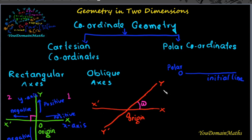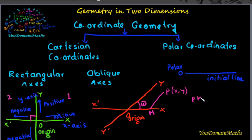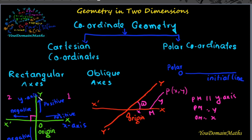Now let P be any point on the plane for the oblique axis. Then point P is defined by P of (x, y). Draw a parallel line from point P, which meets at M, so PM is parallel to the y-axis, and PM equals y, OM equals x. This is similar for the rectangular axis. For convenience, we will write x-axis and y-axis for rectangular axis, and x-dash and y-dash axis for oblique axis.